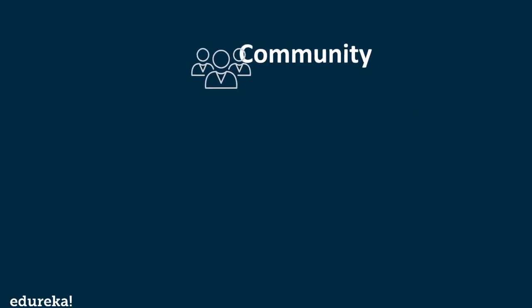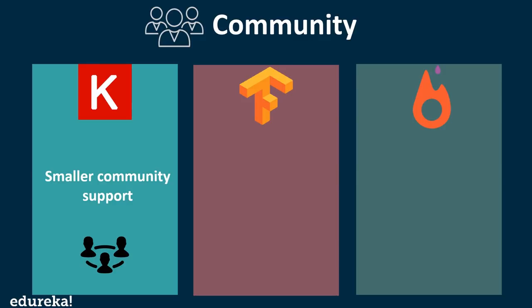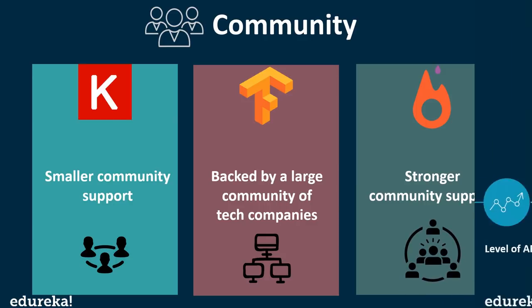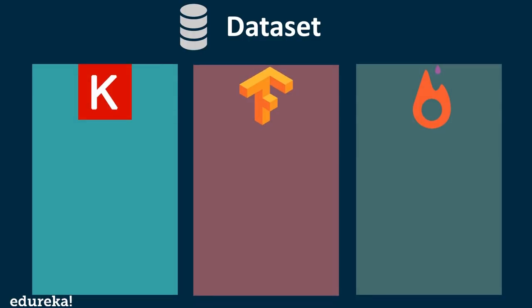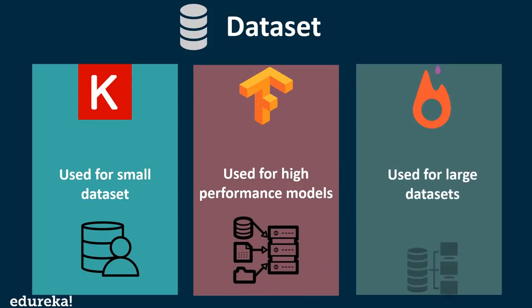The next parameter is community support. Keras has a smaller community support when it comes to troubleshooting problems or errors. TensorFlow, on the other hand, is backed by a large community of tech companies. PyTorch also has strong community support. Regarding datasets, Keras is mostly used for small datasets as it is comparatively slower, while TensorFlow and PyTorch are preferred for high performance models and large datasets because of better training duration.